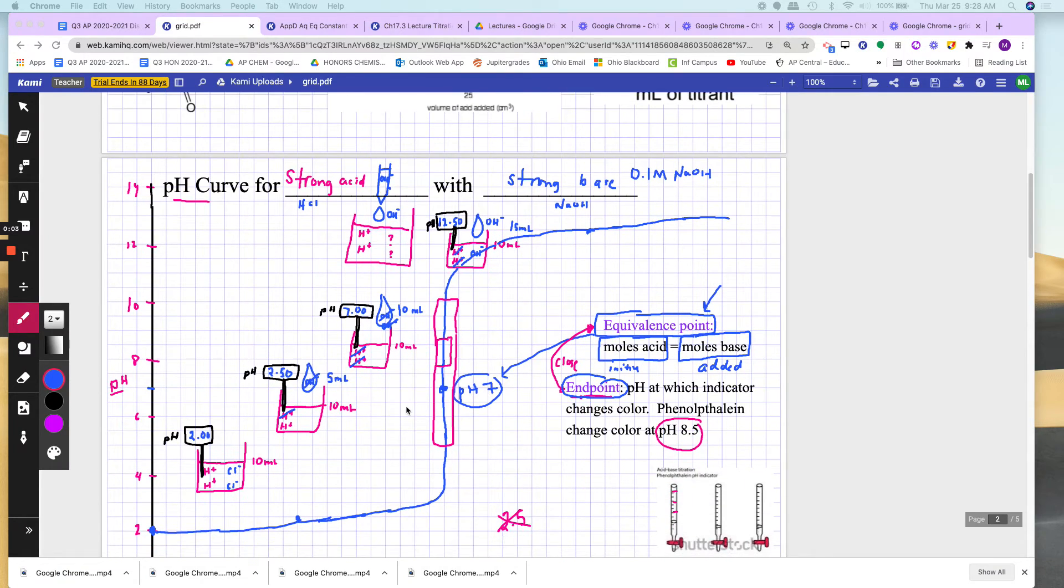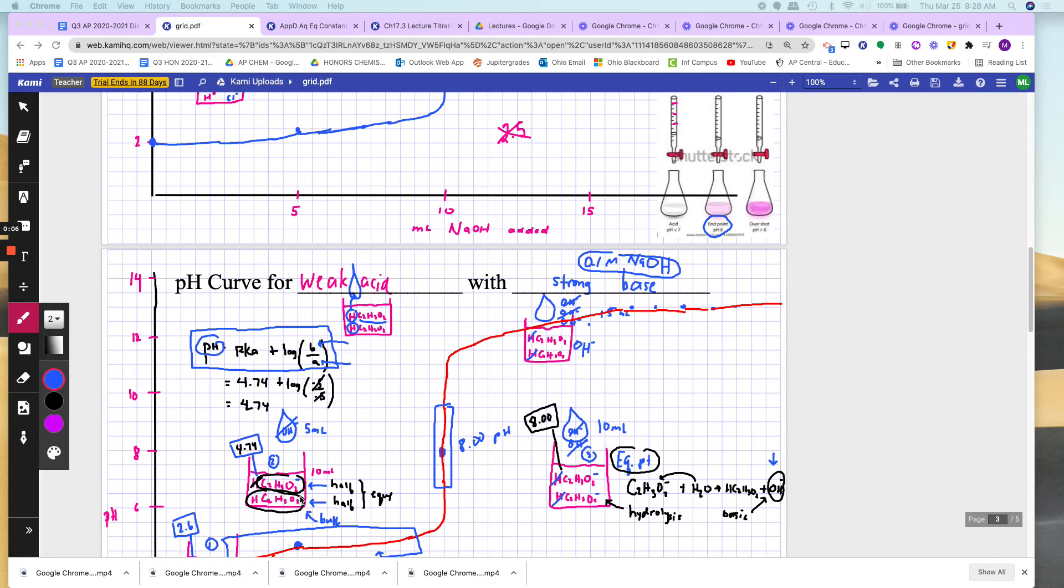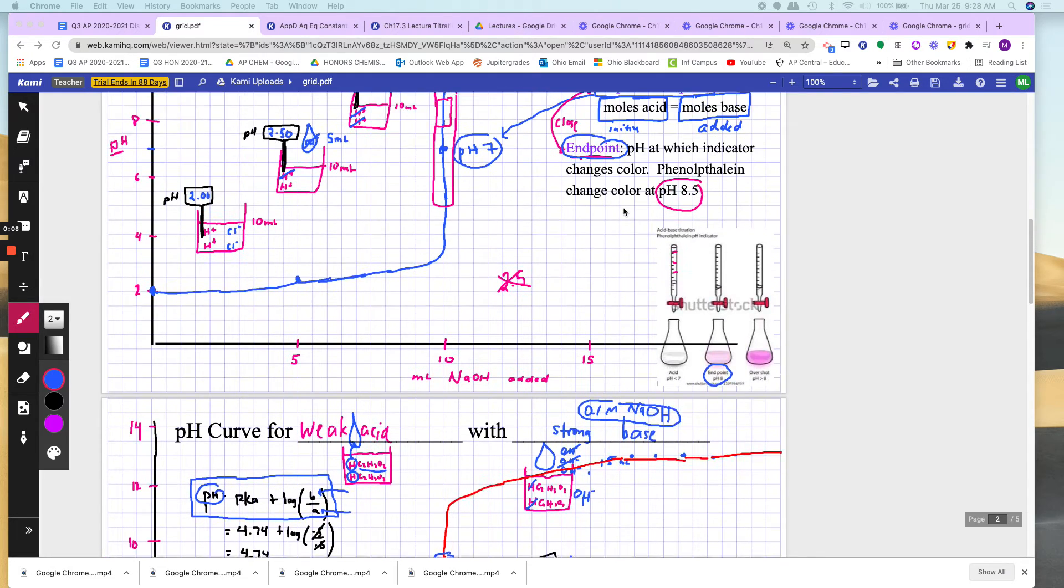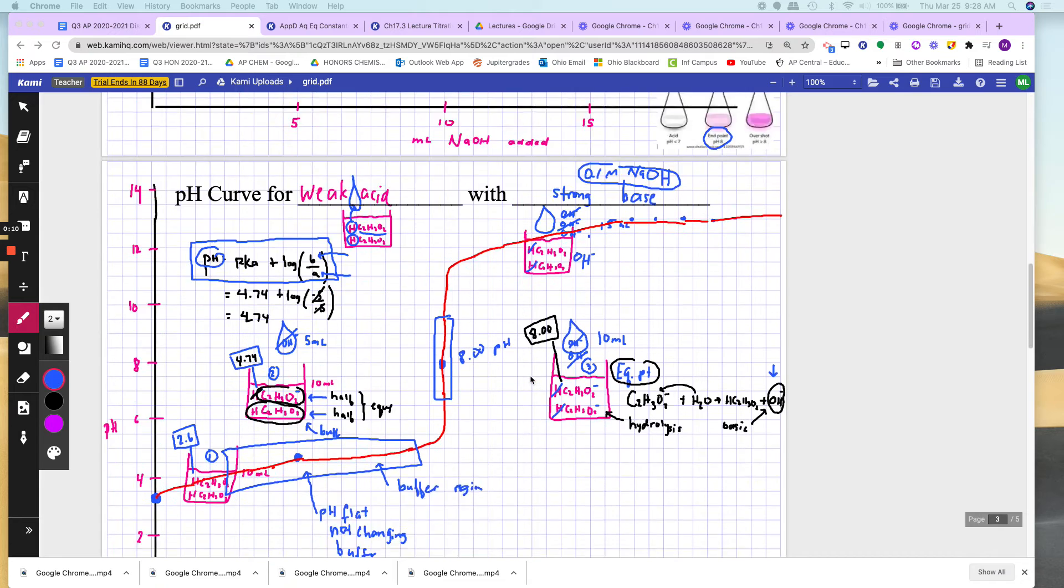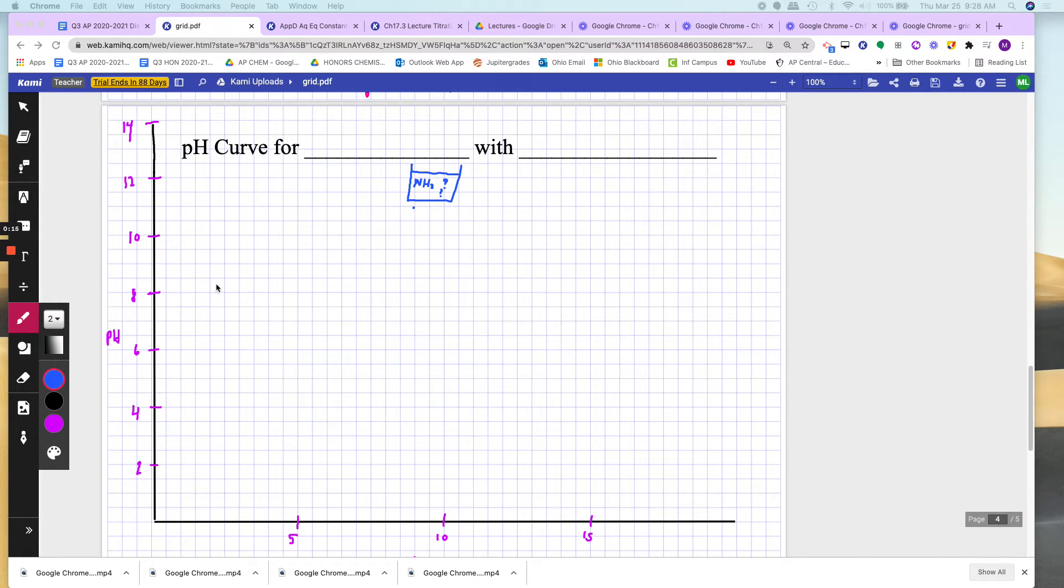For both of the titrations we've done so far, you have strong acid and no weak acid. You're titrating them, both of them with strong bases. Let's do a third one. What do you think will go in the beaker now? What are the other choices? Yeah, why don't we try a weak base now? So we're going to try a weak base.